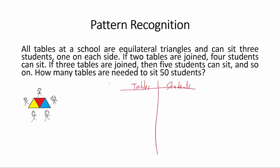When you have one table, you can sit three students. When you have two tables, this guy must move over here, and you only have room for one more guy. So you have two tables, four students.